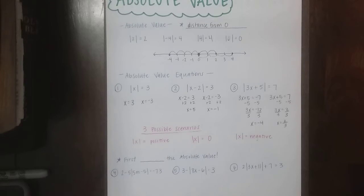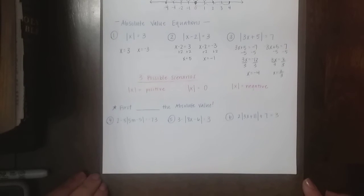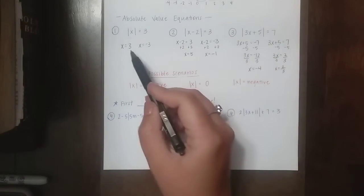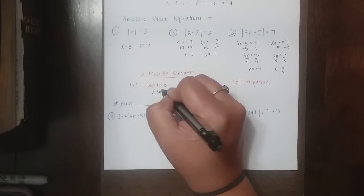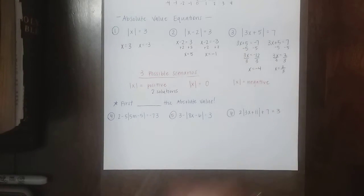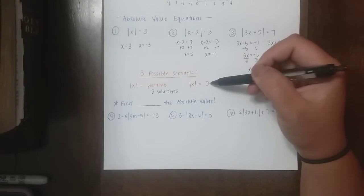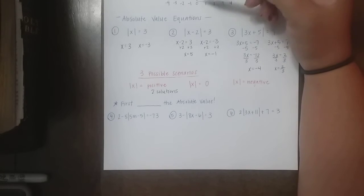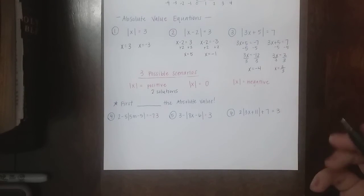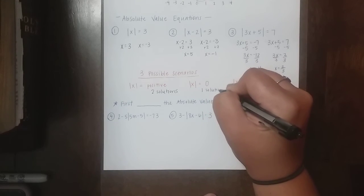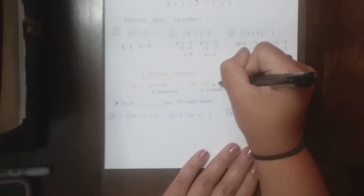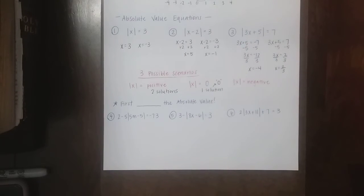We do have some different scenarios — there's not always going to be two answers. If my distance from 0 equals a positive number, like what we just did, we're going to have two solutions every time. If absolute value equals 0, like when we said the number is on 0, it's got to be 0 — there's no going left or right. So there's actually only going to be one solution, because only one number is 0 units away from 0, and that solution is going to be 0.